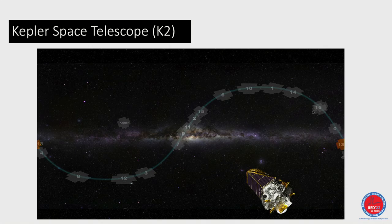Kepler was originally observing just one small patch of the sky. With K2, because the solar wind angle had to be specific, they were forced to shift the telescope by 90 degrees in sectors every time the solar pressure wasn't adequate, cycling through multiple sectors continuously.